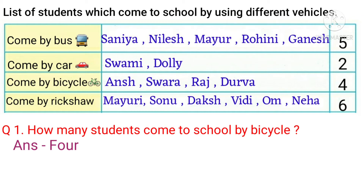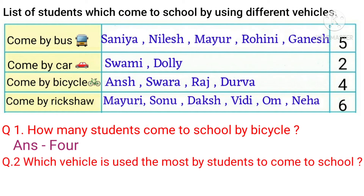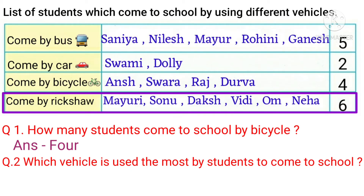Let's move to the second question. Which vehicle is used the most by students to come to school? If we observe carefully, we can see 6 students come to school by rickshaw, which is the highest. So the answer is rickshaw.